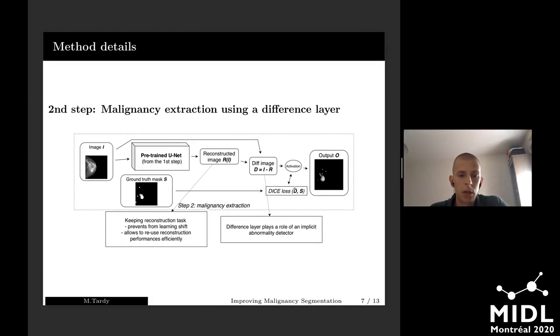The second step is fully supervised malignancy extraction. But instead of training our U-Net to do segmentation, as Zhu proposed in his work, we continue to follow this reconstruction training by adding a difference layer on top of our U-Net. This allows us to reuse reconstruction performance efficiently and use the difference layer as an implicit abnormality detection.